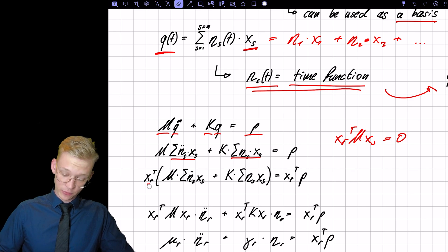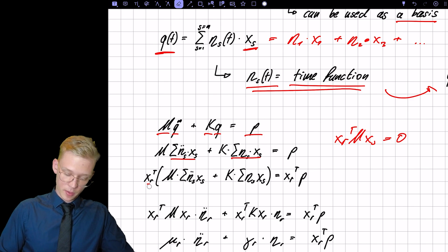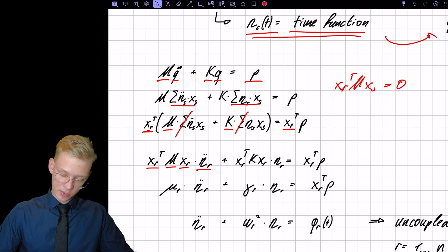And what we are left with, we pre-multiply on the right side as well, what we are left with is XR transpose times the mass matrix XR times our twice differentiated time function plus